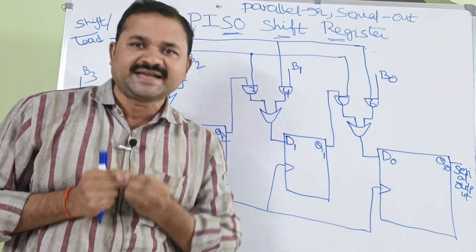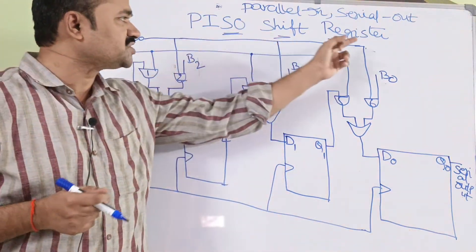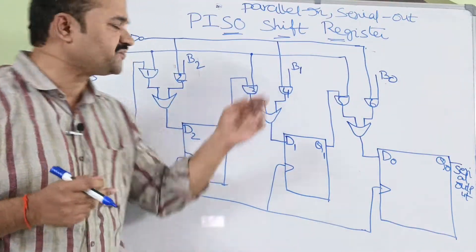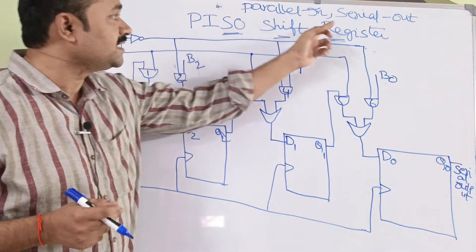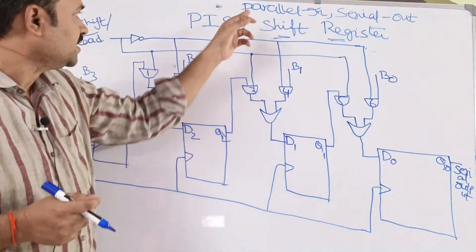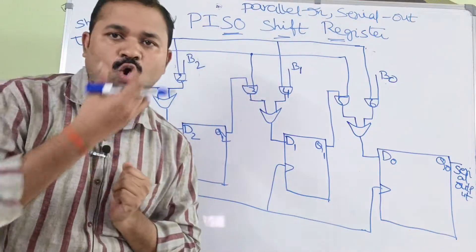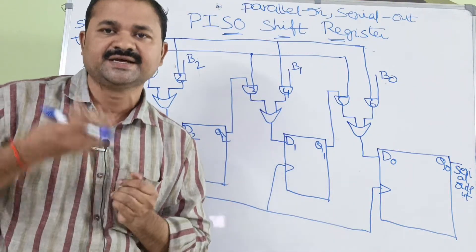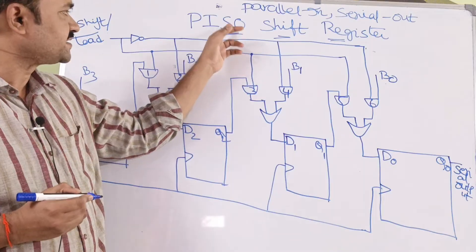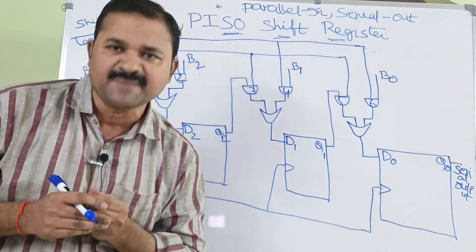Now let us discuss about PISO shift register. PISO stands for parallel in serial out. Here the input will be loaded into the shift register in parallel, whereas the output will be shifted in serial manner.